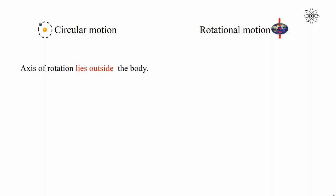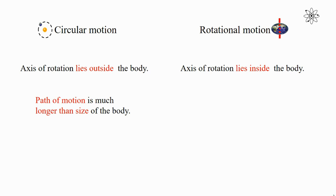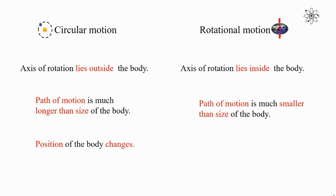Let's summarize the differences between circular motion and rotational motion. First, in circular motion the axis of rotation lies outside the body; in rotational motion the axis of rotation lies inside the body. Second, in circular motion the path of motion is much longer than the size of the body; in rotational motion the path of motion is much smaller than the size of the body. Third, in circular motion the position of the body changes; in rotational motion the position of the body does not change.